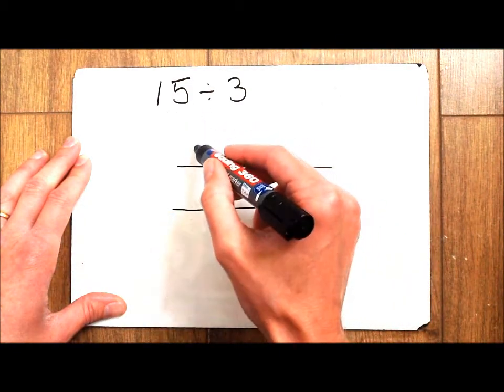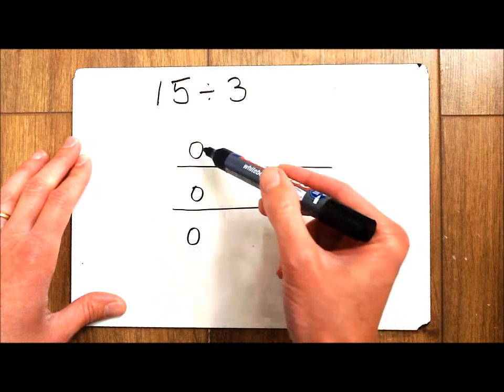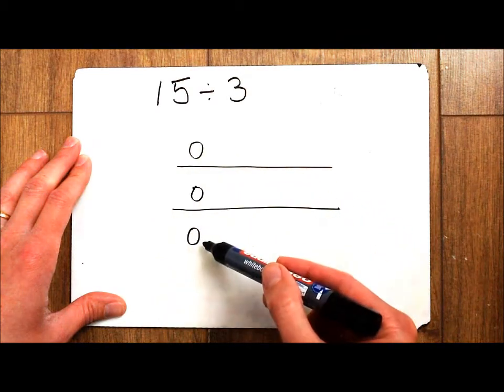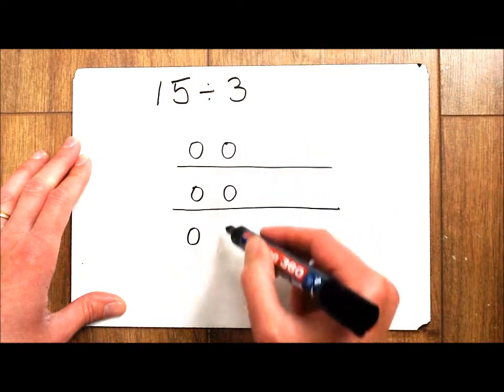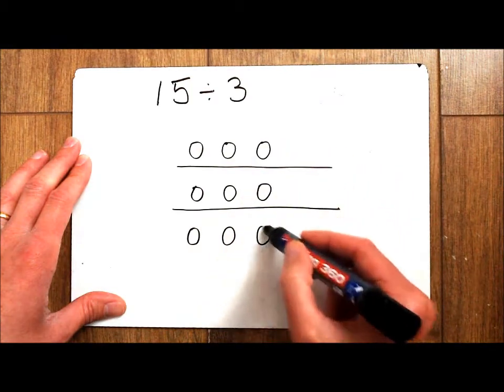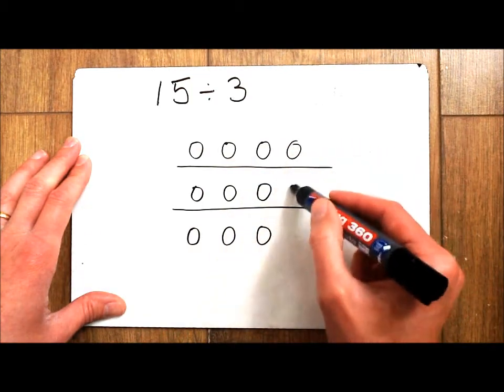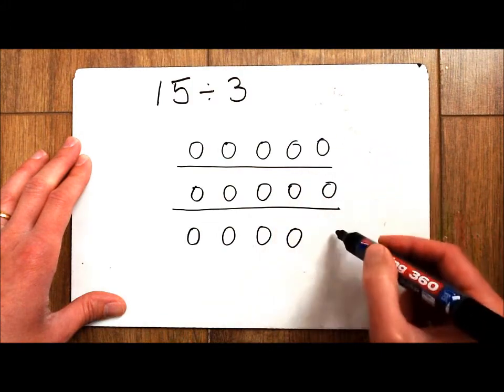I'm going to start to share out my 15. It's really important that I put one in each of the groups so that it's fair. One, two, three, four, five, six, seven, eight, nine, ten, eleven, twelve, thirteen, fourteen, fifteen.